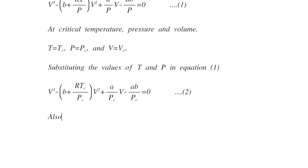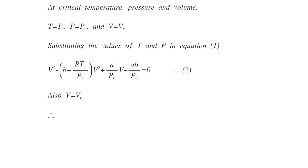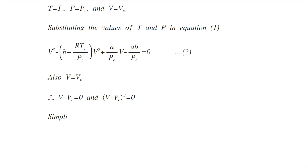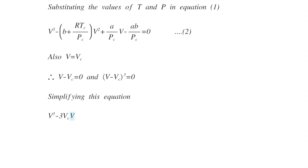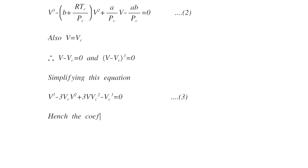Also, v = Vc at the critical point. So (v - Vc) = 0, and taking the cube, (v - Vc)³ = 0. Simplifying, we get v³ - 3Vc·v² + 3Vc²·v - Vc³ = 0. This is equation 3.